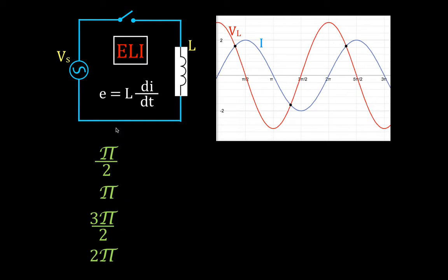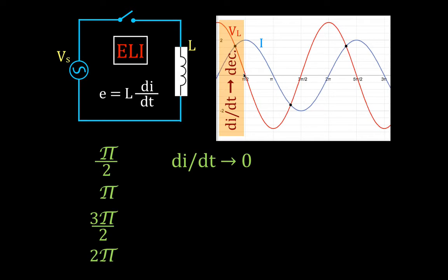For the first quarter cycle, from 0 to pi over 2: the rate of change of the current is decreasing — the current curve is getting less steep. At the very top, at maximum current, the slope of the current curve is 0, and since the slope equals the voltage, you can see the voltage is 0 there. The rate of change of the current goes to 0, and the voltage across the inductor also goes to 0 at the end of the first quarter cycle.